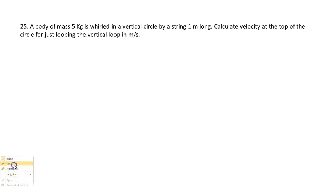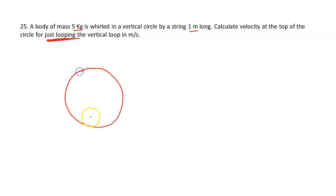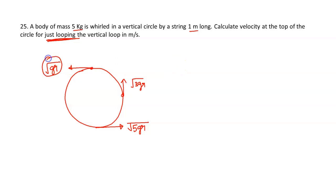The next question is again vertical circular motion. A body of mass 5 kg is whirled in a vertical circle by a string 1 metre long. Calculate the velocity at the top for just completing the loop. At the topmost point for just looping, the minimum velocity is √(gr). With g = 10 and r = 1, v = √10 ≈ 3.1 m/s. That is the solution.